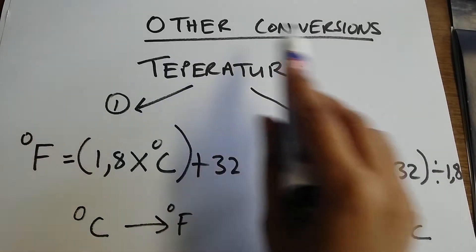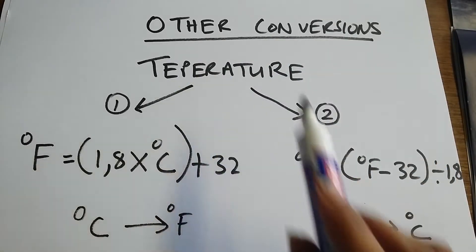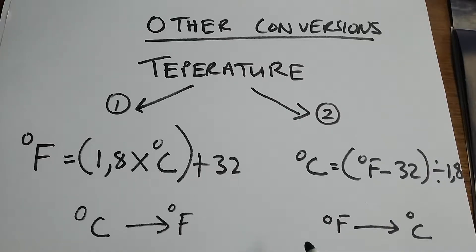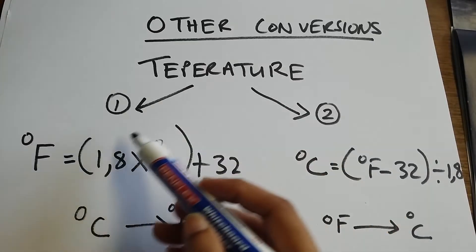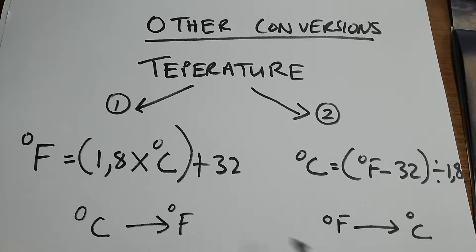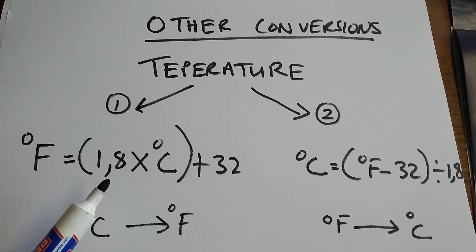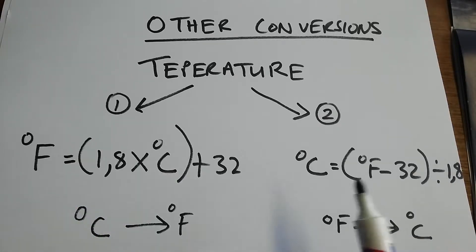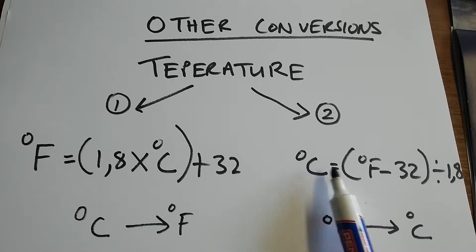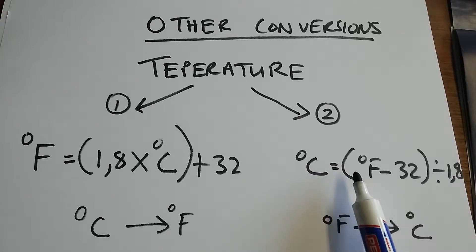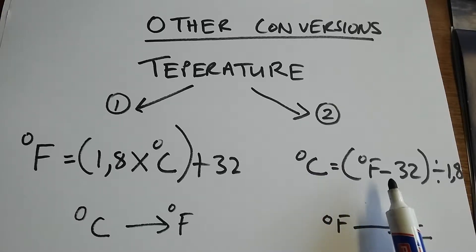Today we're looking at other conversions, focusing on temperature. In this section, I've got two equations to choose from. One says degrees Fahrenheit is equal to 1.8 times degrees Celsius plus 32. My second equation says degrees Celsius is equal to degrees Fahrenheit minus 32, divided by 1.8.